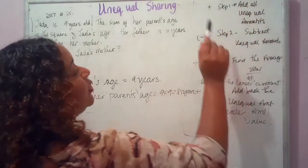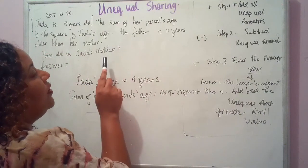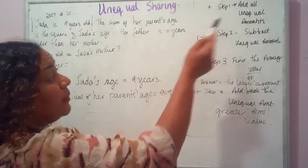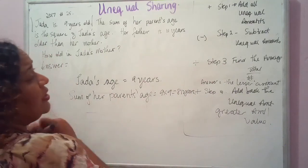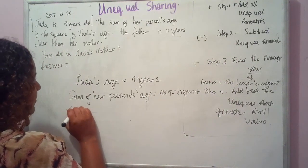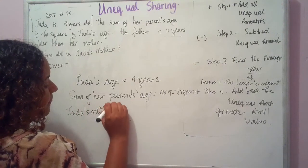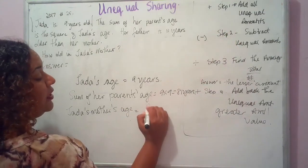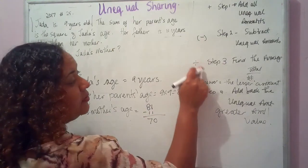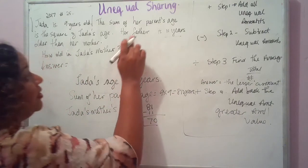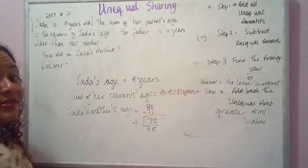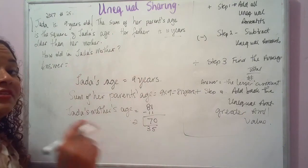Step one: we would add up all unequal amounts, but since we only have two values and one unequal amount, we just identify it: 11 years. Step two: subtract the unequal amount — 81 minus 11 = 70. Step three: divide by the number of persons — 70 divided by 2 = 35. This answer is the lesser value. Since Jada's mother is younger than Jada's father, Jada's mother's age = 35 years old.